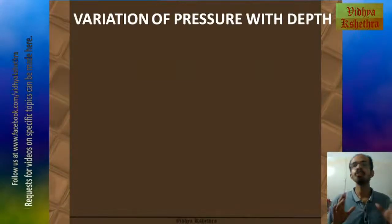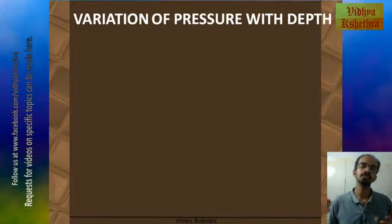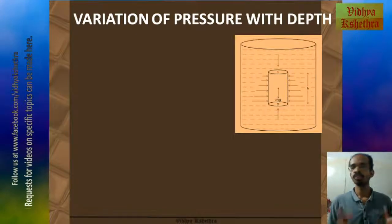Now variation of pressure with depth. For this we can consider a cylinder immersed in a fluid. The cylinder is having a mass of M and having a height of H and cross-sectional area of A.